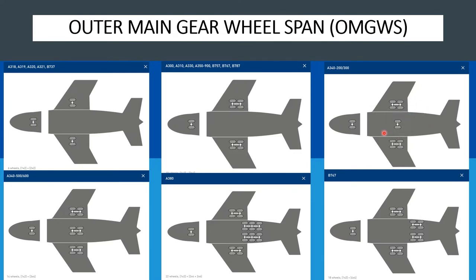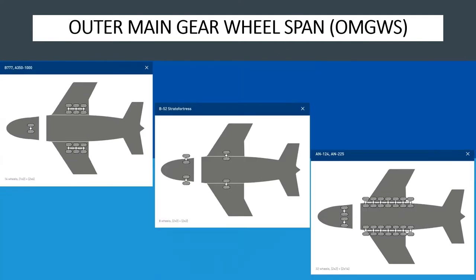Looking at the A340-200 and 300 series, it has rear wheels comprising three different sets. We measure from the outer to the outer — not from the middle set. Similarly for the A380 and 747, you measure outer to outer, ignoring the middle undercarriage. Your focus is the widest width of the undercarriage, which determines the outer main gear wheel span used to determine runway width.